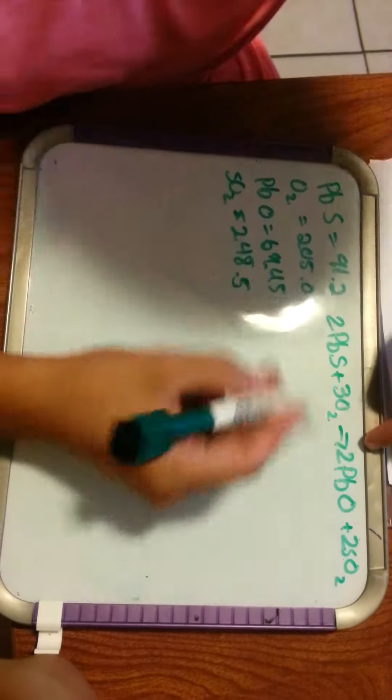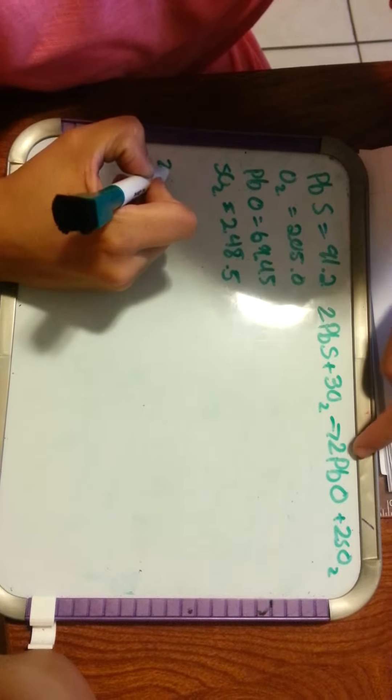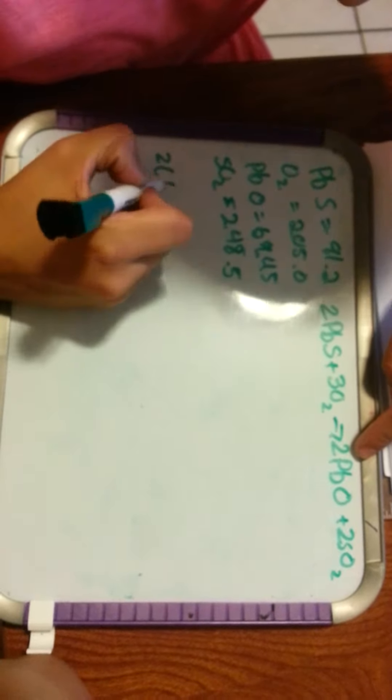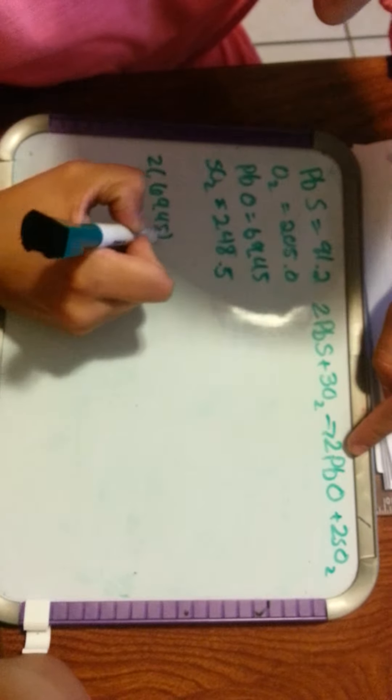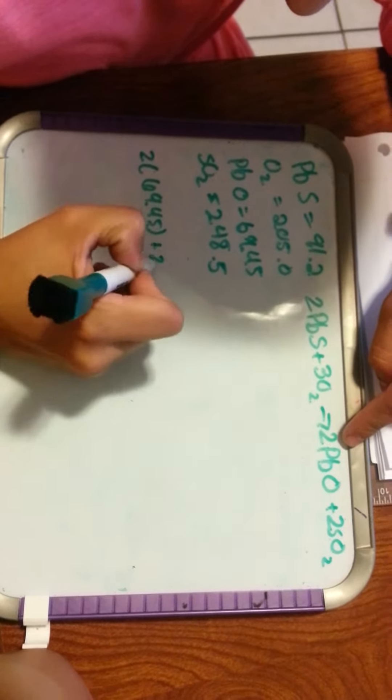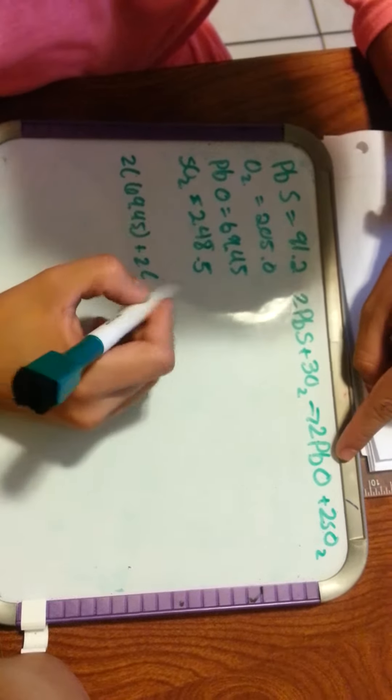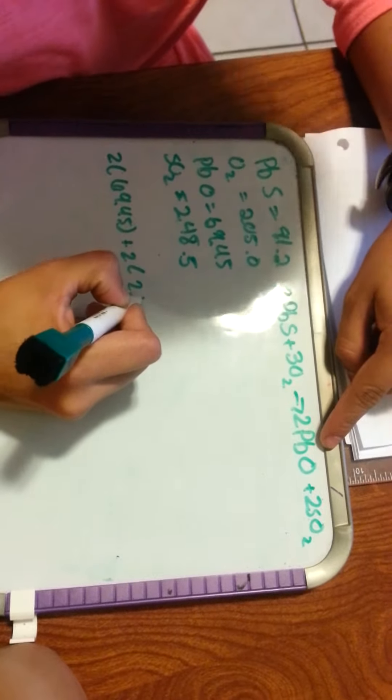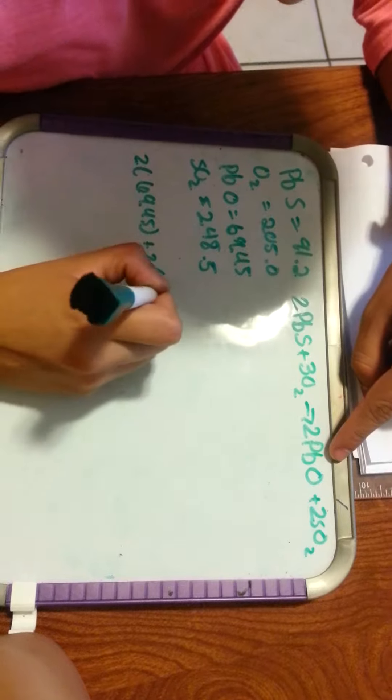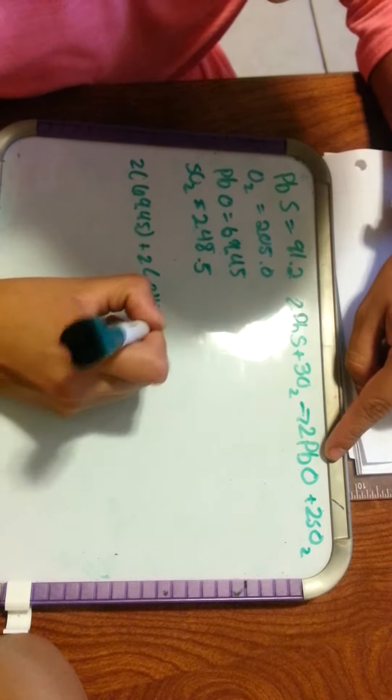So we start with 2PBO which is 69.45 plus 2 of SO2 which is 248.5.